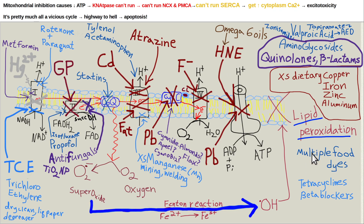A lot of these processed food diets are loaded with mitochondrial inhibitors. Many preservatives are antifungals — and they inhibit complex 2 as well. That's another reason why I don't like non-organic food and don't like processed food.